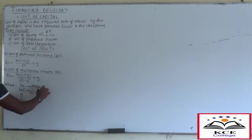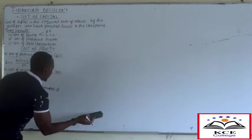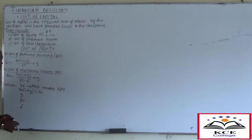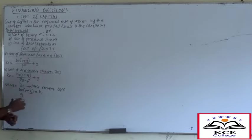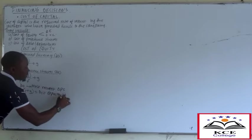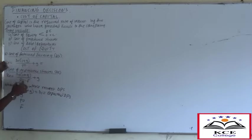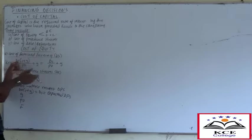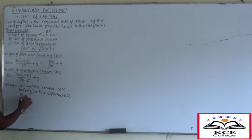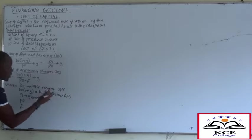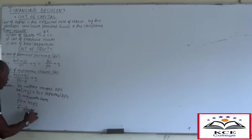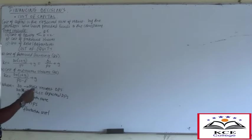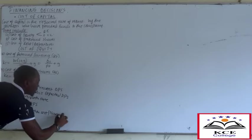D0 is the most recent dividend per share. D0(1+G) is how much is expected - the proposed dividend - so it's the same as D1, the expected dividend per share. You can also work with D1/P0 + G because D1 is what we expect to pay. D0 is what we had paid previously, expected to grow to get the expected dividend. G is the growth rate. P0 is the market price per share. F is the flotation cost - same as issuing cost, the cost incurred when raising funds.